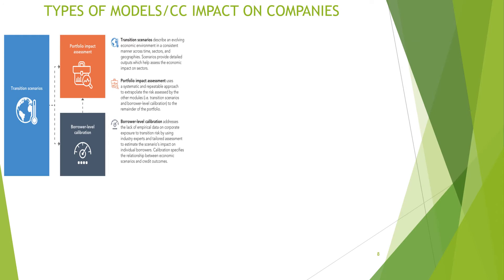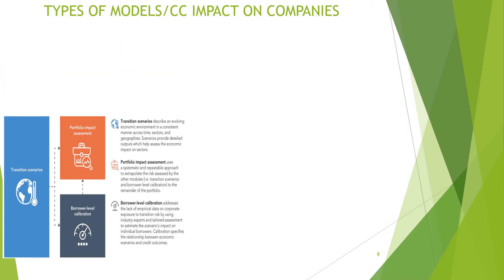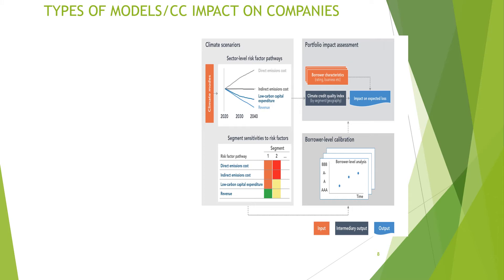The transition scenario model is divided into portfolio impact assessment and borrower-level calibration. In portfolio-level assessment, a systematic, repeatable approach is used to extrapolate risks assessed by other models. In borrower-level calibration, different borrower characteristics are taken from various data sources and calibrated against transition scenarios. Sector-level risk factor pathways include: direct emission costs — costs directly incurred due to climate change; indirect emission costs — from supply chain or external stakeholders; and low-carbon capital expenditure, usually driven by policy changes at the provincial or federal government level.